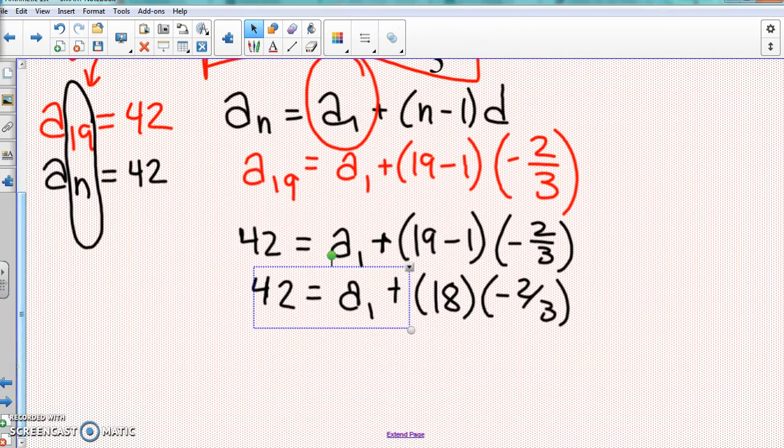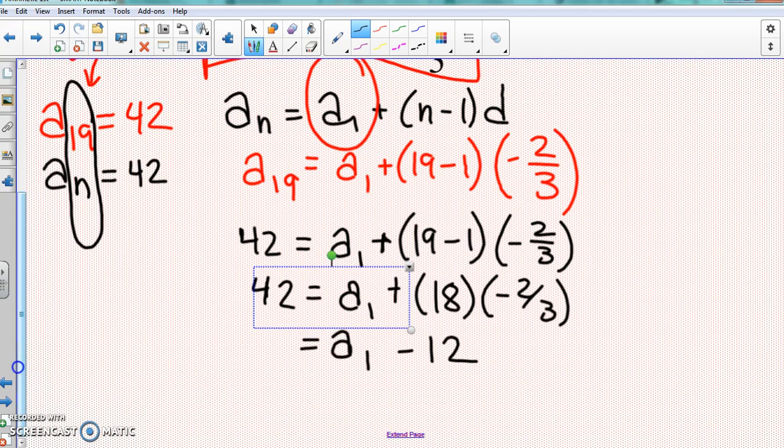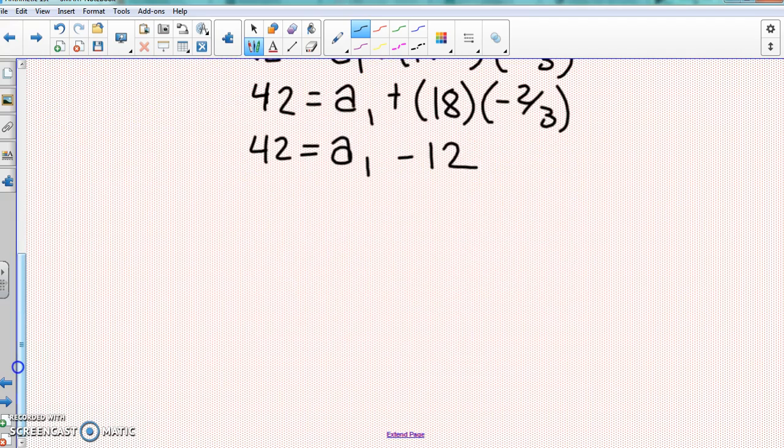Go ahead and multiply 18 times negative 2 over 3, and you should get a negative 12. And be careful when you're copying, this is not like an 8 or anything of that sort, that is a 1 again. So all the way down, a₁ is the same.